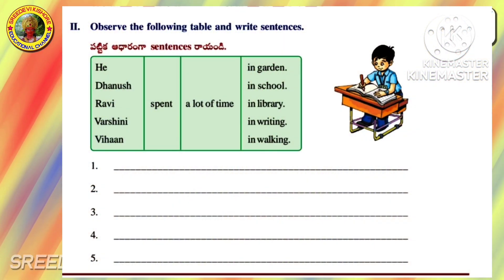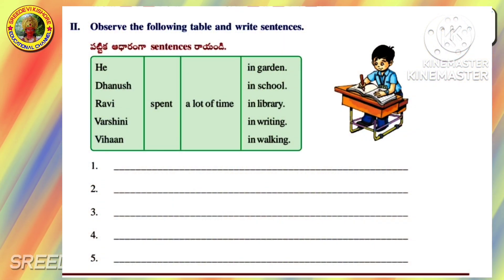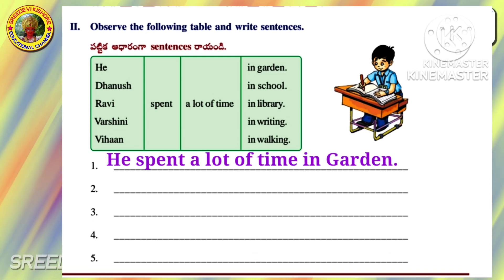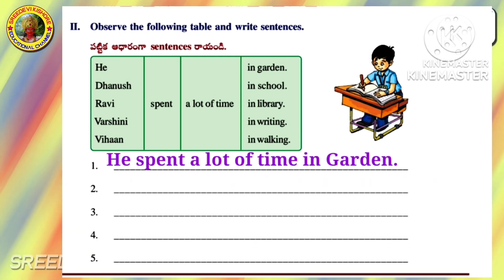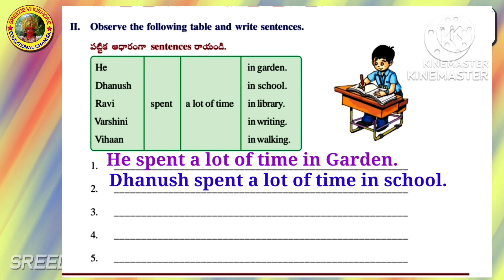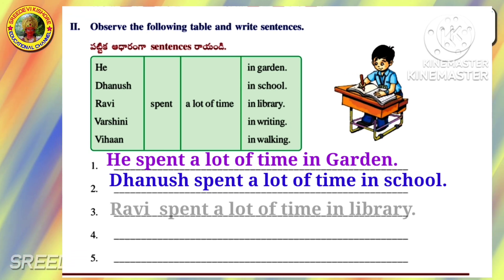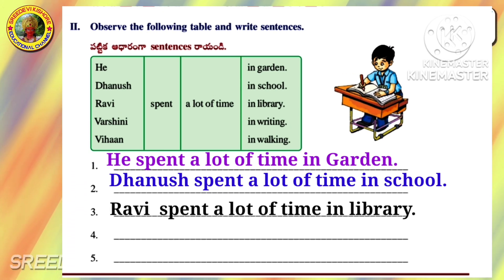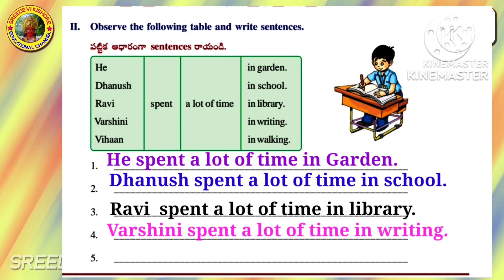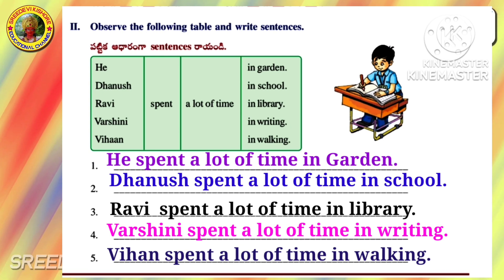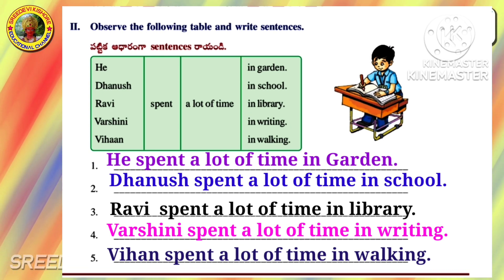Observe the following table and write sentences. He spent a lot of time in the garden. Bhannush spent a lot of time in school. Ravi spent a lot of time in the library. Varshini spent a lot of time in writing. Vihann spent a lot of time in walking.